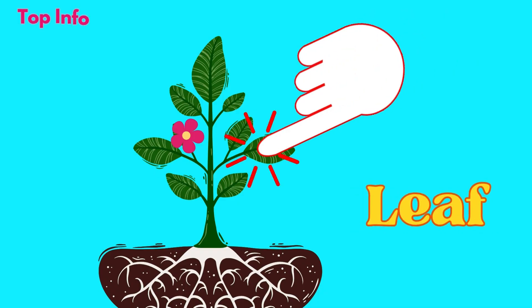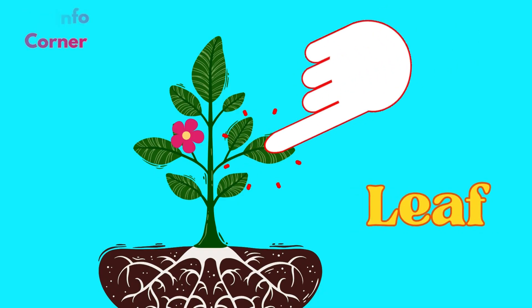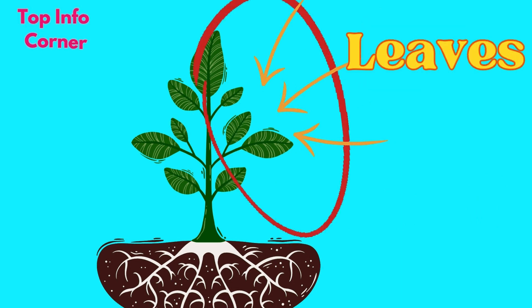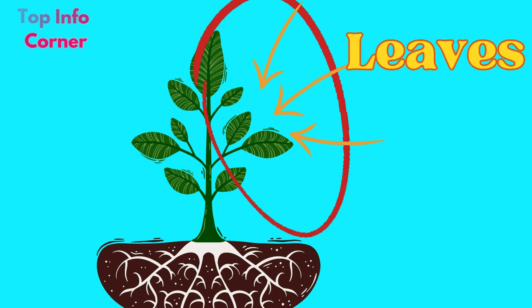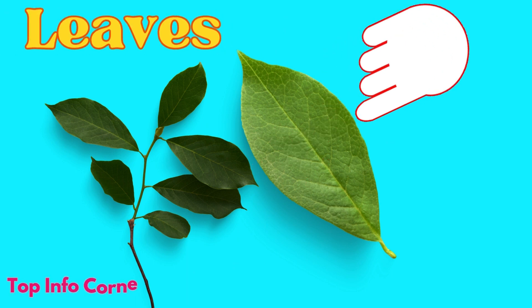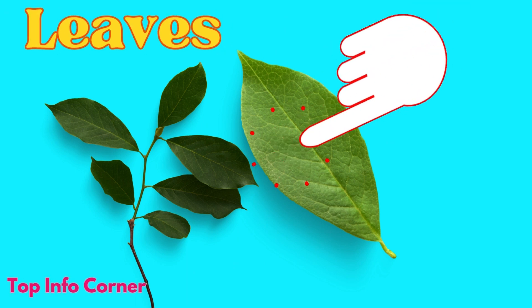This is a leaf of the plant. All the leaves are collectively known as leaves. Say with me: these are leaves, and these are green in color.